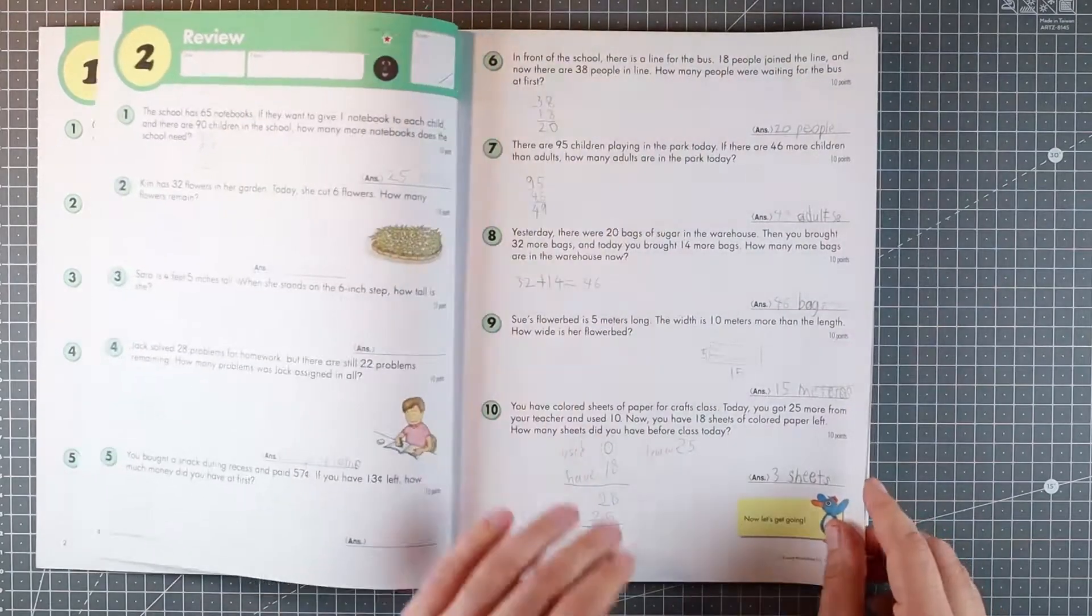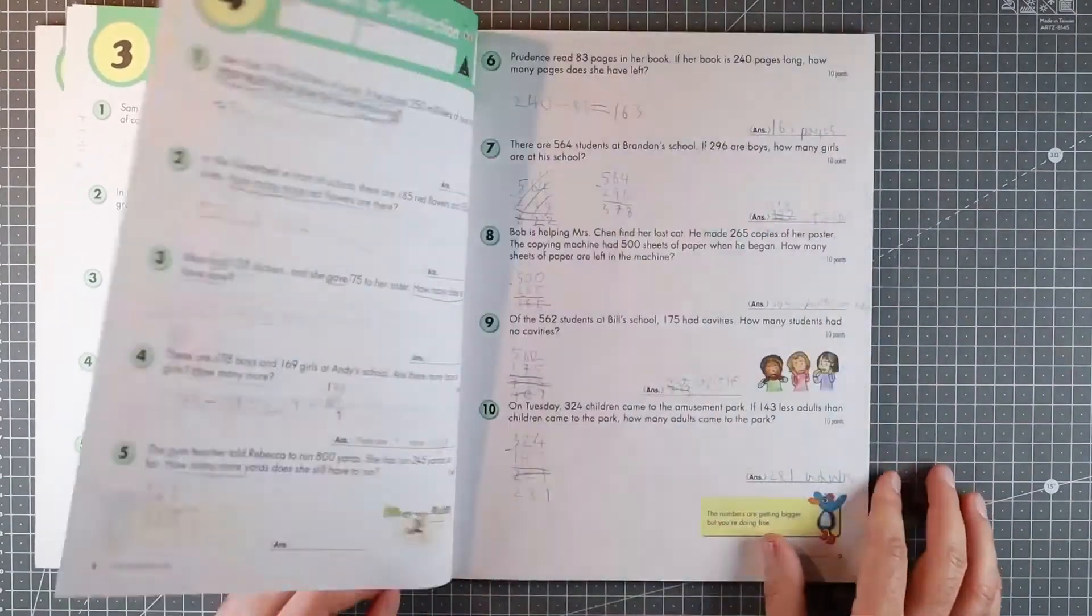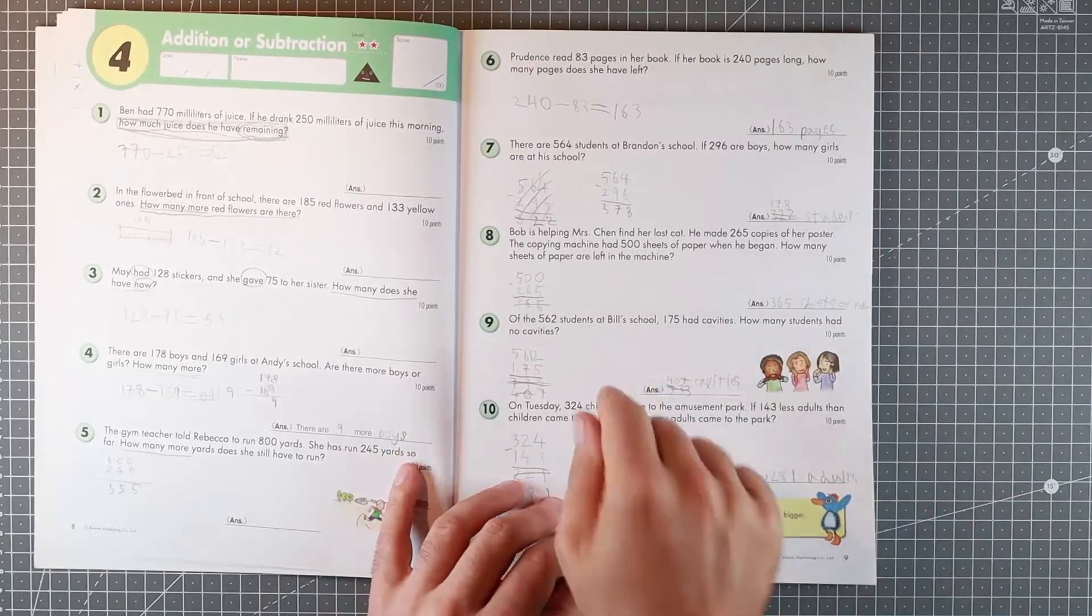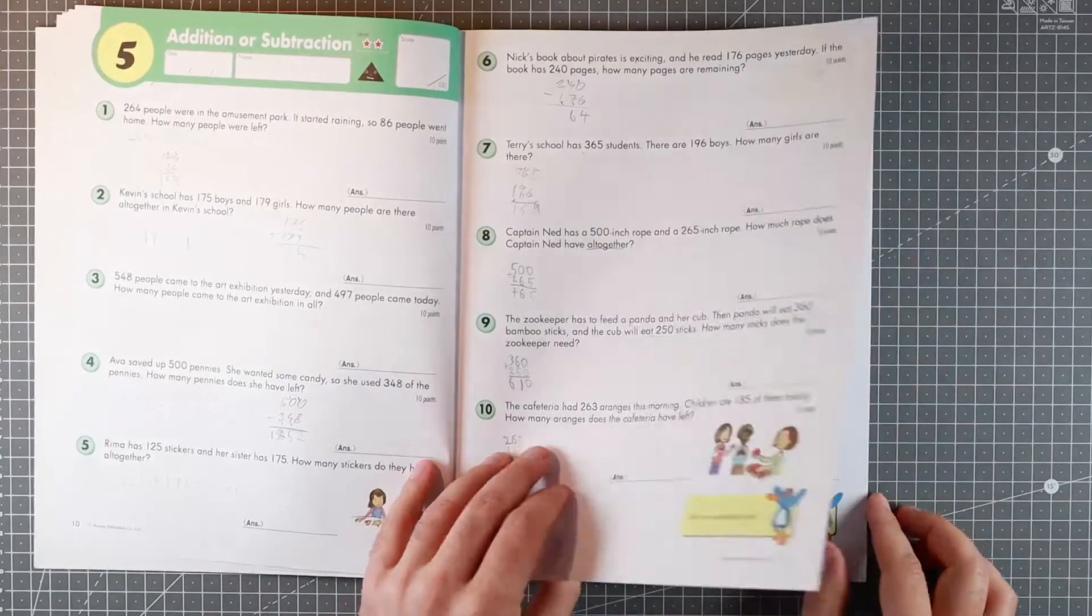As you'd expect from a Kumon book, quite repetitive. Make sure kids get the problem down and sometimes they don't. You end up doing it a couple of times, erasing as we've done here.